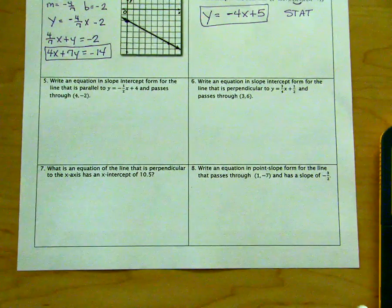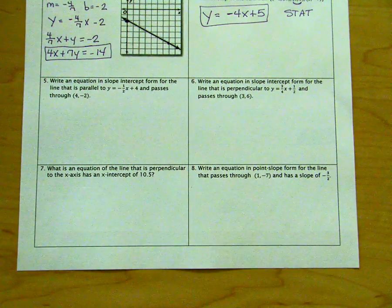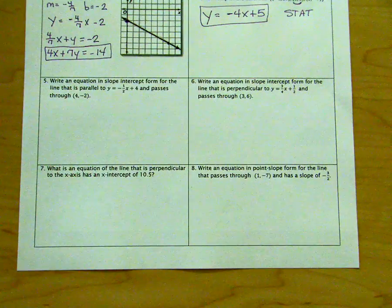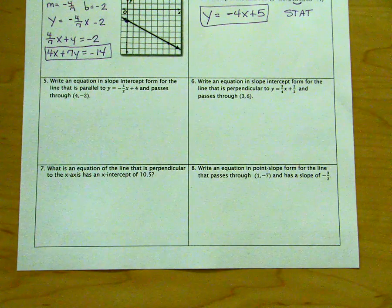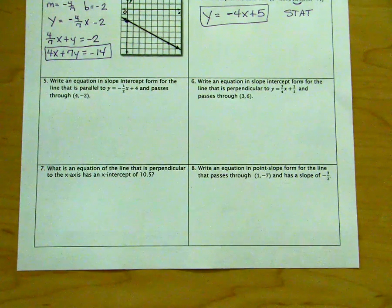We need to write an equation in slope-intercept form for the line that is parallel to the line y equals negative one-half x plus four, and it passes through the point (4, -2).